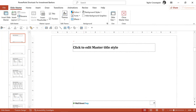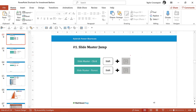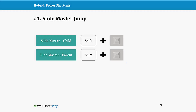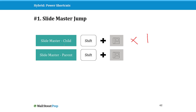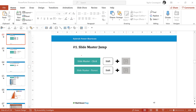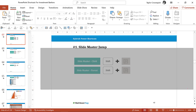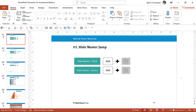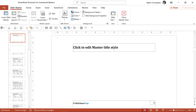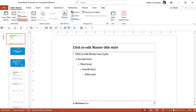Now watch what happens if I hold the Shift key and click it — I jump to the child slide layout for whatever layout I'm currently on. This is super important as you start working with PowerPoint slide masters. The first time you click it, you go to the child slide. The second time you click it, it jumps you to the parent slide. Let me demo this: holding the Shift key, I click the Normal icon and jump to the child slide layout.